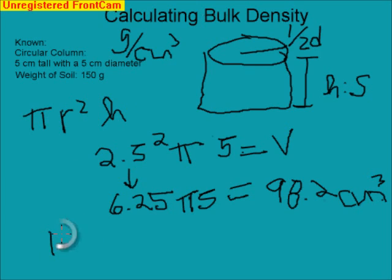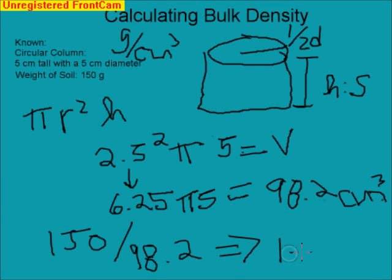So all we have to do is have 150 divided by 98.2, and we end up with our bulk density 1.53 grams per cubic centimeter. And that is exactly how you calculate bulk density.